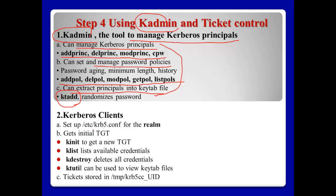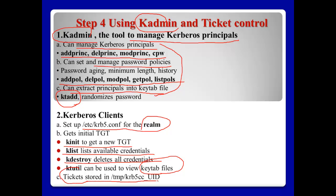For ticket control commands: k-init to get a new TGT; k-list to show or list available credentials and tickets; k-destroy to delete all credentials or tickets; and k-util can be used to view the keytab file, because the keytab file is a database file and you cannot see its contents using text tools. If you are successfully issued a ticket, it will normally be stored in a specific directory, where UID is normally a number.